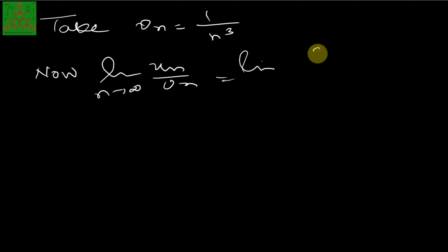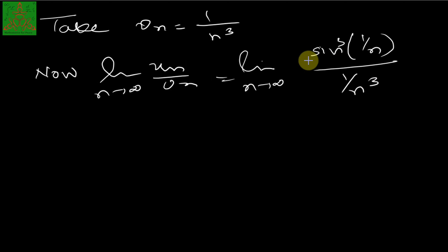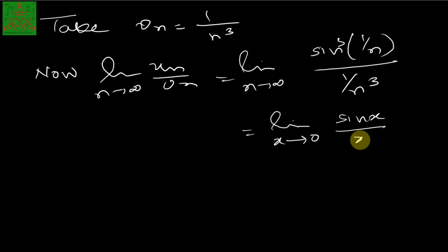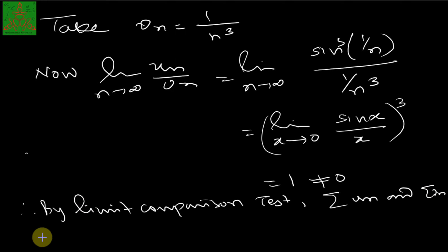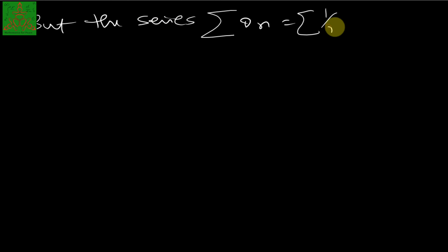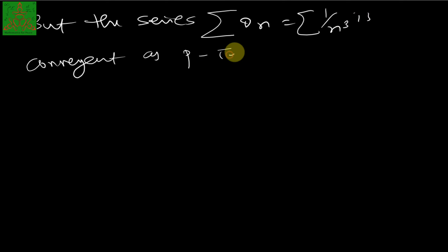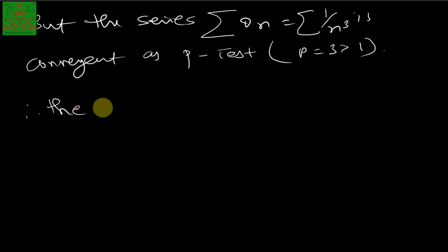As n → ∞, this equals lim(x→0) [sin(x)/x]³ = 1³ = 1, which is a finite non-zero number. By the limit comparison test, summation of u_n and summation of v_n are convergent or divergent together. Since summation of 1/n³ is convergent by the p-series test (p = 3 > 1), summation of sin³(1/n) is also convergent.